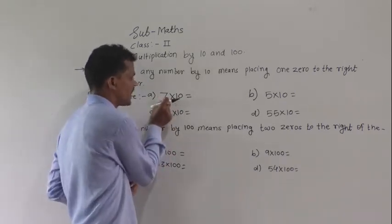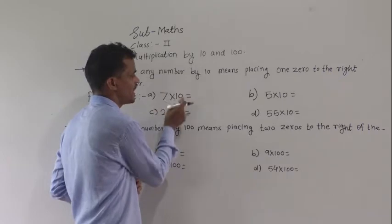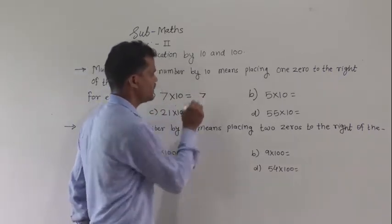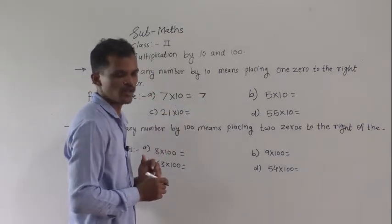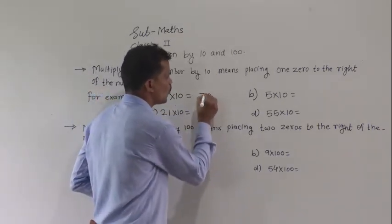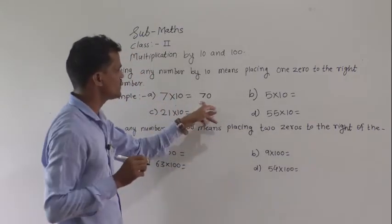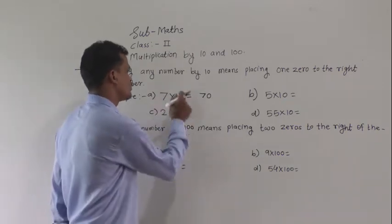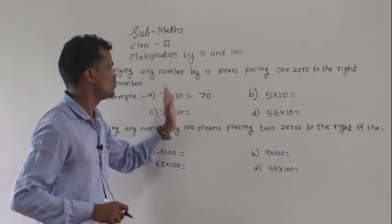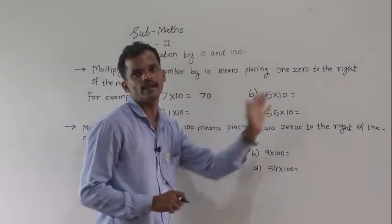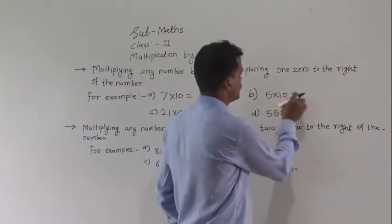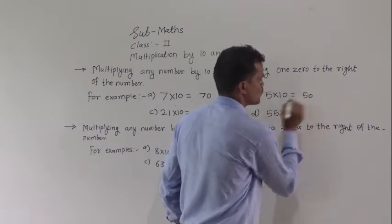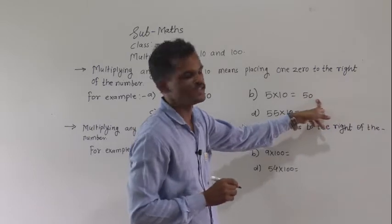See here: 7 multiplied by 10. You have to write that 7 and at the right of that number put a zero. So the number formed is 70 — 7 into 10 is equal to 70. Similarly, 5 into 10: write 5 and after that 5 put a zero, so 50 is the answer.